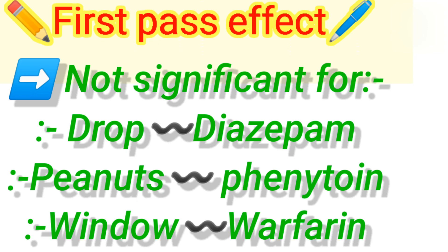The clinical significance of the first pass effect is that dose adjustment is important. For routes which avoid the first pass effect, bioavailability of the drug would be more, so the dose should be reduced accordingly. For drugs where the first pass effect is significant, bioavailability would be less. Therefore, dose adjustment is necessary in all these cases.